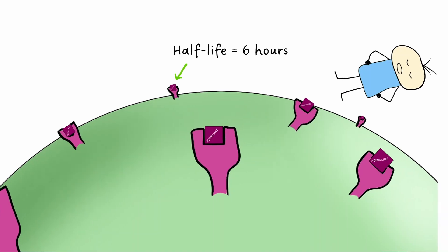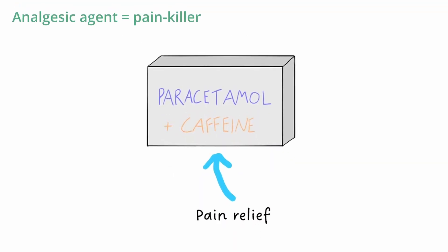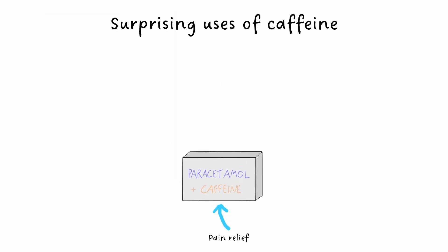As well as being a socially popular drug, it also has some impressive uses that you might not have realised about until now. Firstly, when added to other analgesic agents, for example, paracetamol, caffeine can improve the degree of pain relief someone experiences.